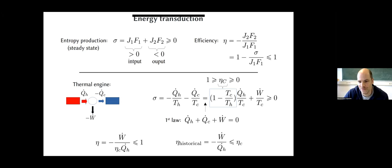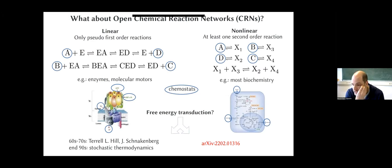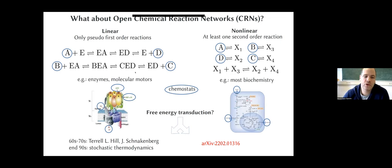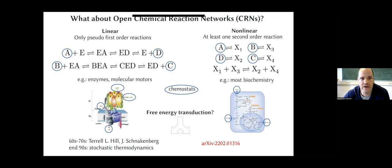This works for any type of energy conversion — wind to electricity, thermoelectricity, and all different sources. Now the question is how does this work in the context of chemical reaction networks? It's important to distinguish two classes. Linear networks — or pseudo-linear — are systems where every reaction is a first-order reaction. In the simplest case it's a unimolecular reaction. The pseudo-linear case occurs when we have something like A plus E giving EA, but A is chemostatic, meaning A is fixed and not a dynamical variable — it is controlled from the outside.